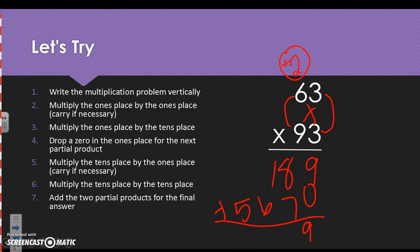If we add our partial products, we have 9 and 0 is 9. 8 and 7 is 15. 6 and 1 and 1 is 8. And we bring down that 5. So we have 5,859 is our final answer.